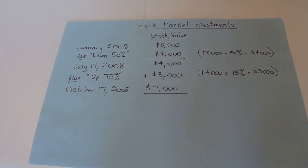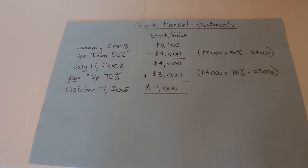So $4,000 plus 75% gives you $7,000, which is still below his initial purchase price of $8,000 in January. Simon has lost money after investing $8,000, going down 50% and then up 75%. The correct answer is C — he has lost money as of October 17th, 2008.